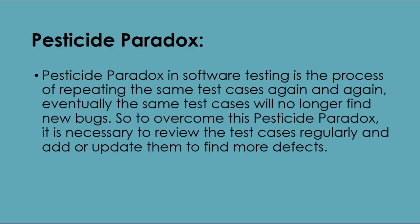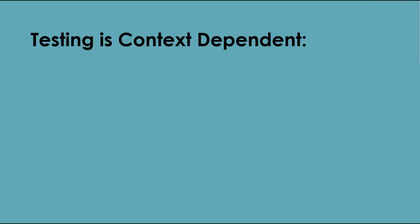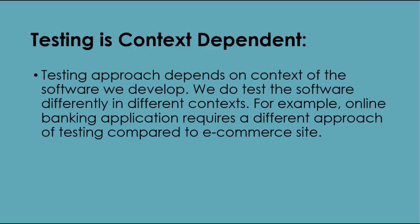Pesticide paradox: the pesticide paradox in software testing is the process of repeating the same test cases again and again — eventually, those same test cases will no longer find new bugs. To overcome the pesticide paradox, it is necessary to review the test cases regularly and add or update them to find more defects.